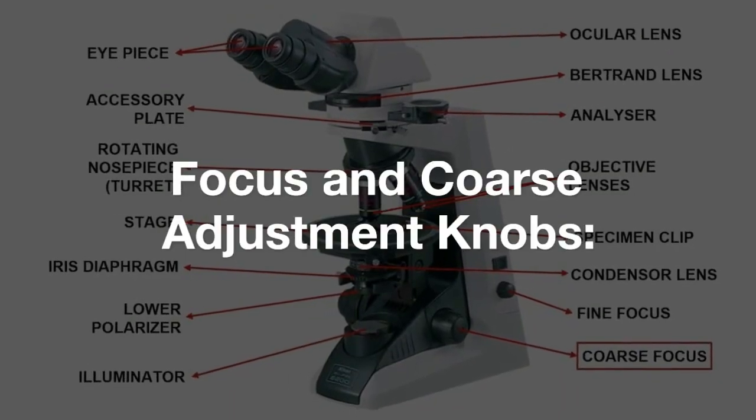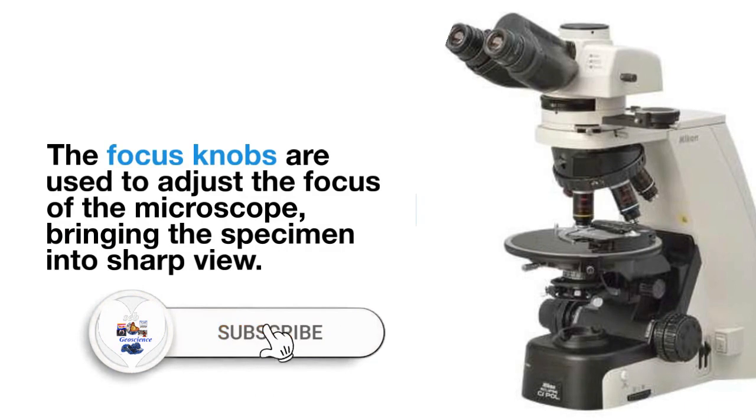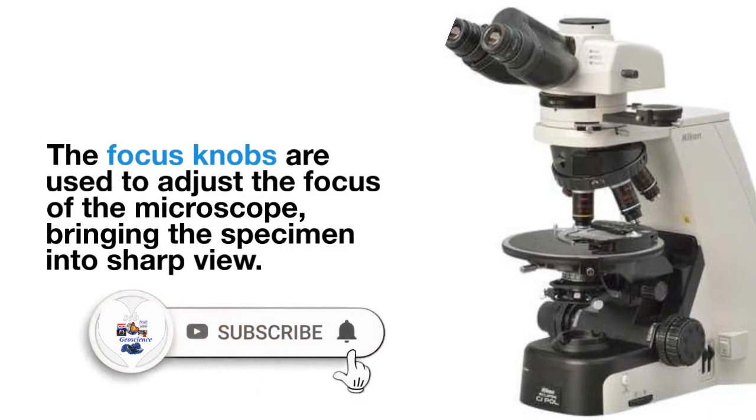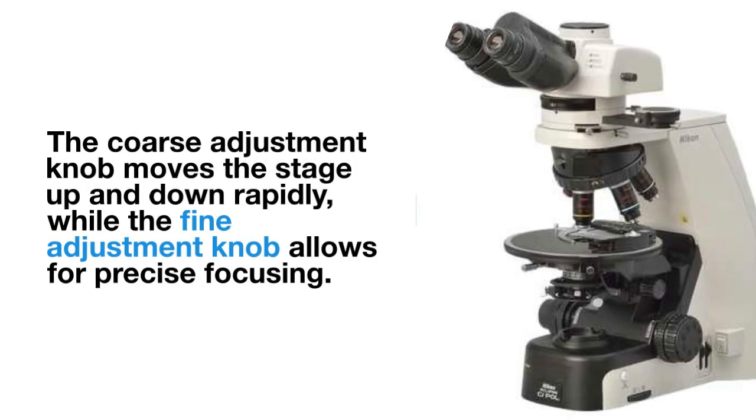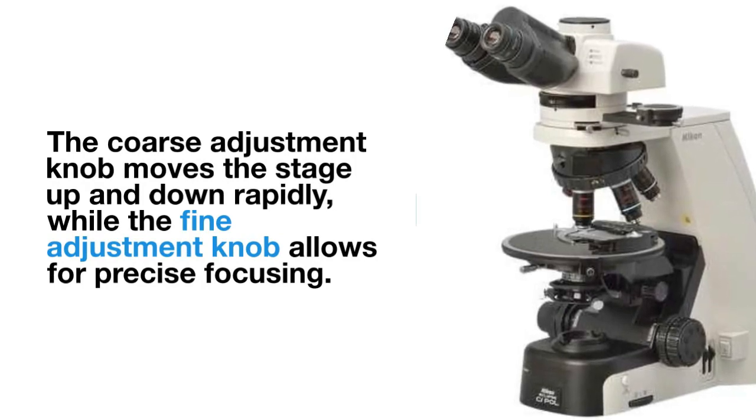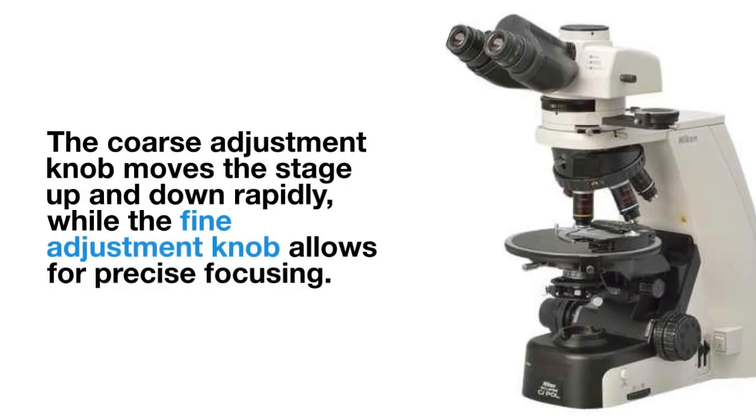Focus and course adjustment knobs. The focus knobs are used to adjust the focus of the microscope, bringing the specimen into sharp view. The course adjustment knob moves the stage up and down rapidly, while the fine adjustment knob allows for precise focusing.